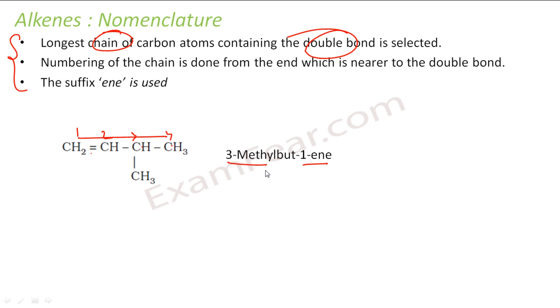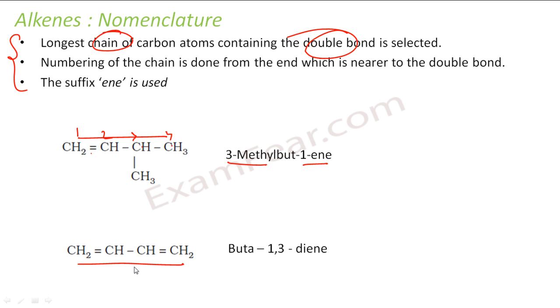So it's 3-methyl-but-1-ene. For this other structure, I take 1, 2, 3, 4 as the longest chain and number them. At first and third positions I have a double bond, so it's buta-1,3-diene.